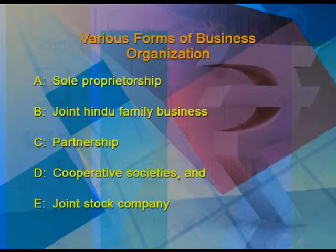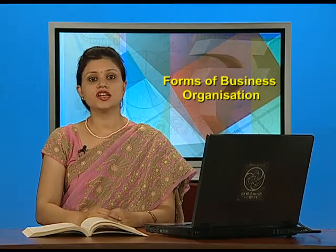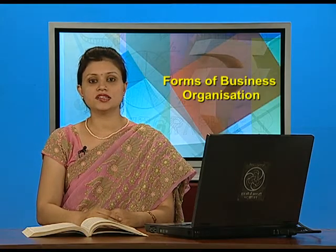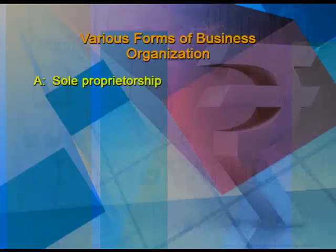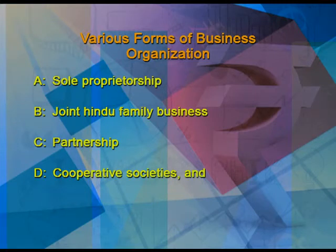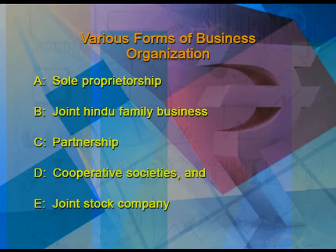Now look at the various forms of business organization. The various forms of business organization are: first, sole proprietorship; B, joint Hindu family business; C, partnership; D, cooperative society; E, joint stock company.